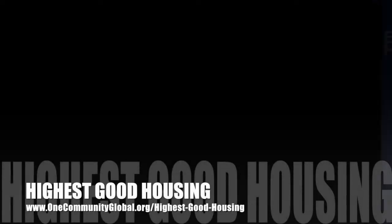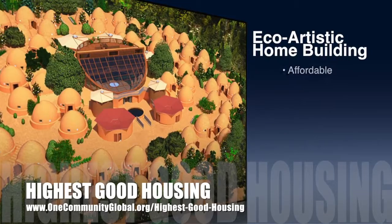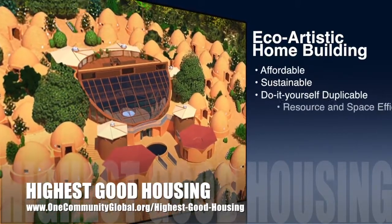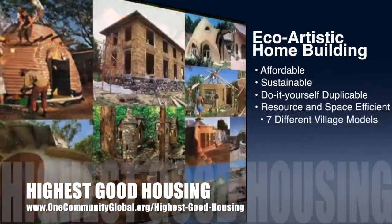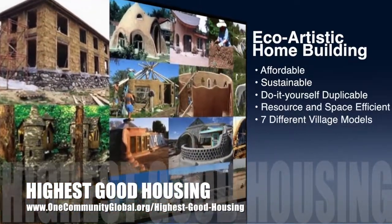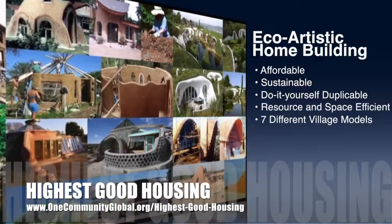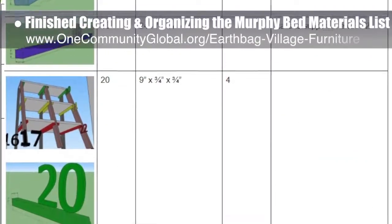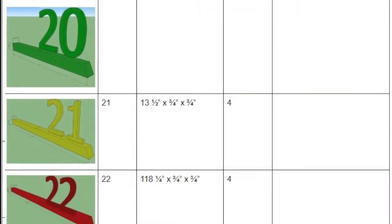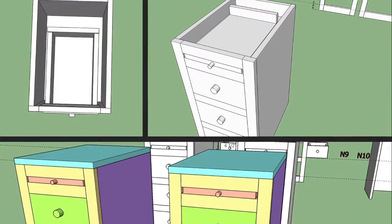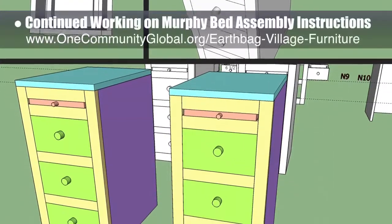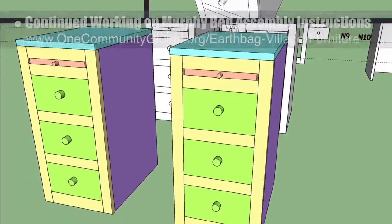One Community's approach to highest good housing is eco-artistic home building that is affordable, sustainable, do-it-yourself, duplicable, resource and space efficient, consisting of seven different sustainably constructed village models. This week the core team finished creating and organizing the murphy bed materials list for the backside redesign, and also tested and identified any errors in the murphy bed nightstand assembly instructions by building them in 3D while using the new instructions.